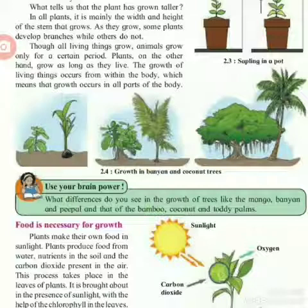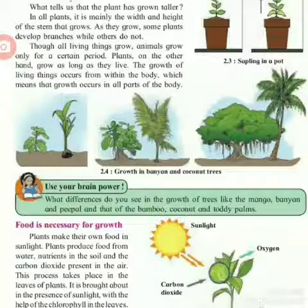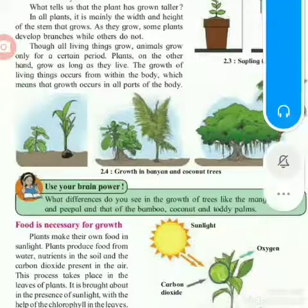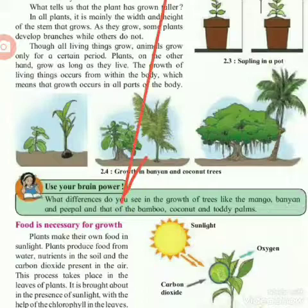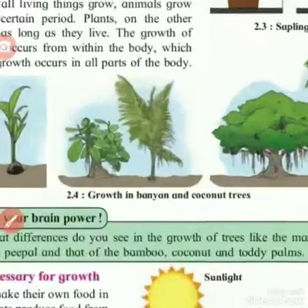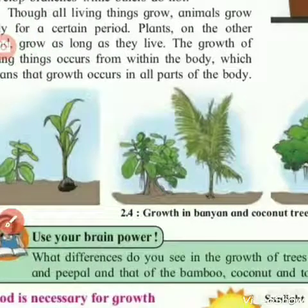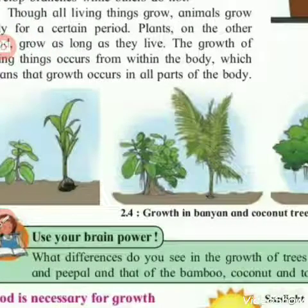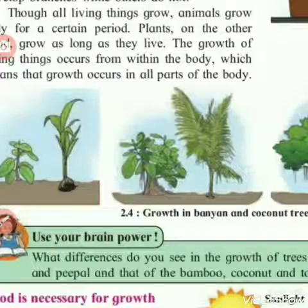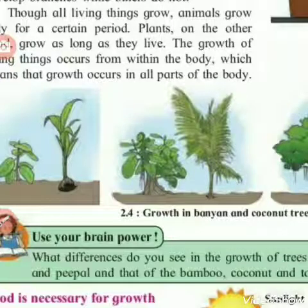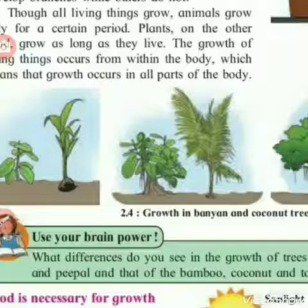If you look at animals — humans — there is growth that occurs within the body. The height of the legs increases, and the growth occurs within all parts of the body. But in plants, it is mainly the width and height of the stem that grows.